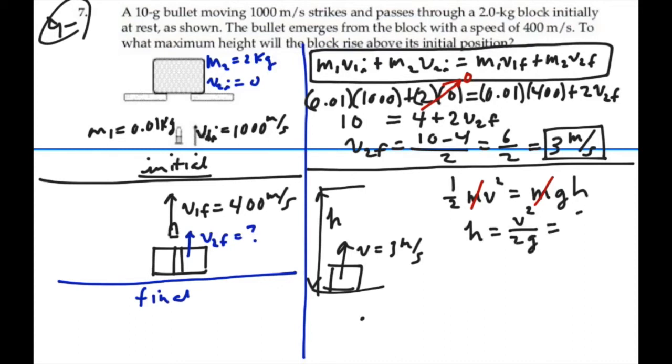That's going to be 3 squared, divided by 2 times 9.8, and that will be .459 meters. So the block will go up .459 meters, or 45.9 centimeters.